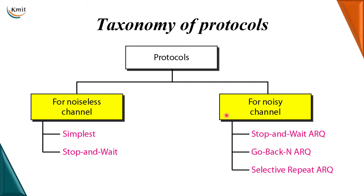In this video we are going to learn about the flow control protocols of the data link layer. These protocols are divided into two types: protocols for noiseless channels and protocols for noisy channels. A noiseless channel is one which does not have any noise or errors, whereas a noisy channel is one where the transmission medium is prone to noise and errors.